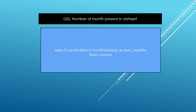The next question is: find the number of months present in the dataset. Basically I used COUNT and DISTINCT. DISTINCT shows unique values. The code is: SELECT COUNT(DISTINCT MONTH(dates)) AS number_of_months FROM corona.